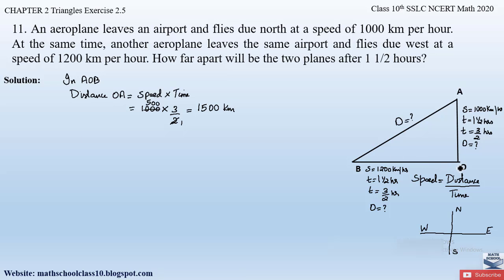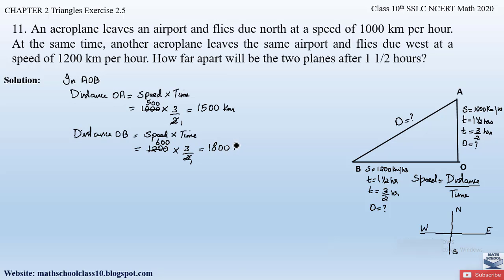Similarly, let us calculate the distance for OB. Distance OB equals speed into time. The speed here is 1200 kilometers and time is three by two hours. So 1200 multiplied by three by two gives 1800 kilometers. Distance OB is 1800 kilometers.